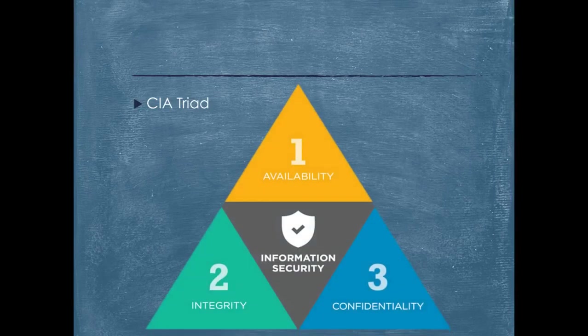Let's try to learn about the CIA triad. CIA stands for confidentiality, integrity, and availability. This is a model designed to guide policies for information security within an organization.